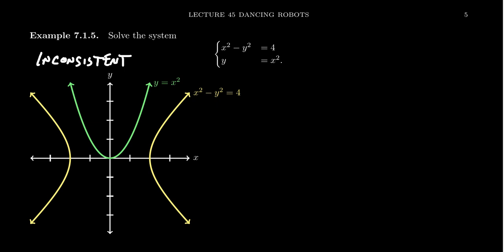So let me show you how we could do that one here. And I'm going to solve this. You could do it by substitution. You could just substitute y equals x squared right here. That would give you the equation x squared minus x to the fourth equals 4. This would be the substitution approach.